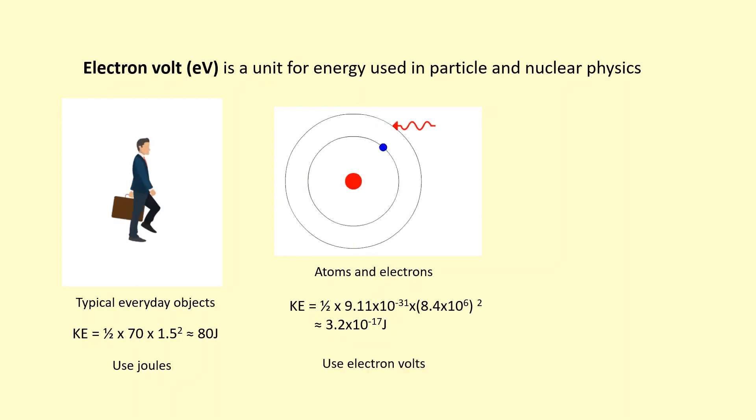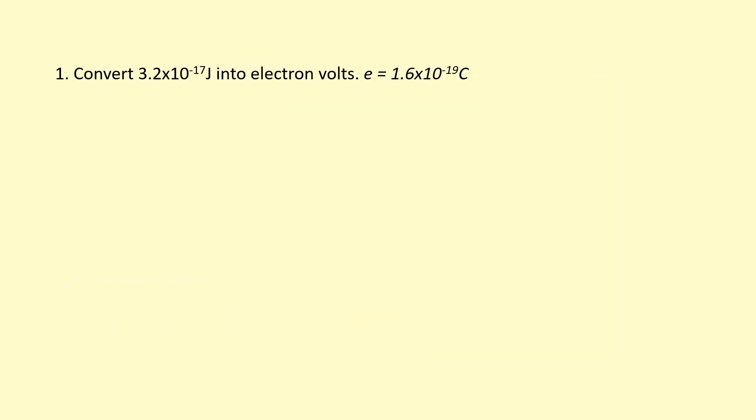So we use electron volts instead. I'm going to show you how to turn this 3.2 times 10^-17 joules into electron volts.